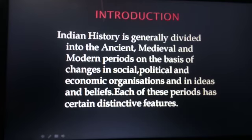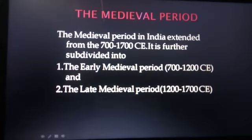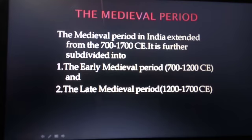In Class 7, we have to study medieval history. The medieval period in India extended from 700 to 1700 Common Era. It is further subdivided into the early medieval period, that is 700 to 1200 CE, and the late medieval period, that is 1200 to 1700 CE.